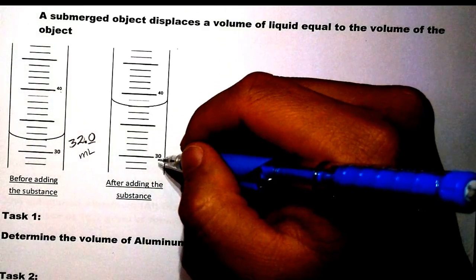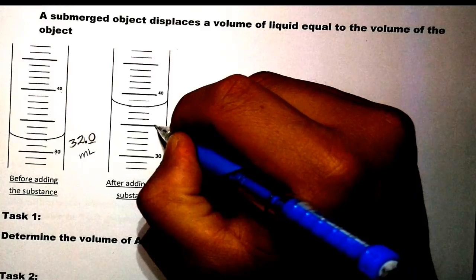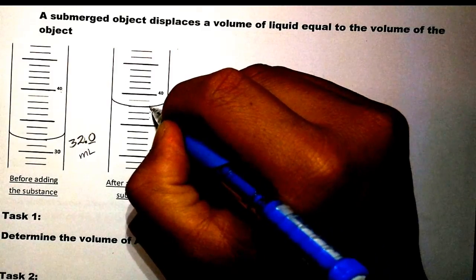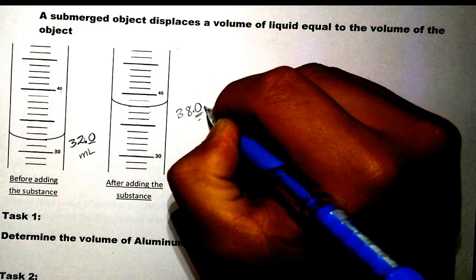Then over here, after we add in the aluminum, we have 30. Of course this will be 35. So 36, 37, and 38. And that gives us 38.0 because this has to be estimated.